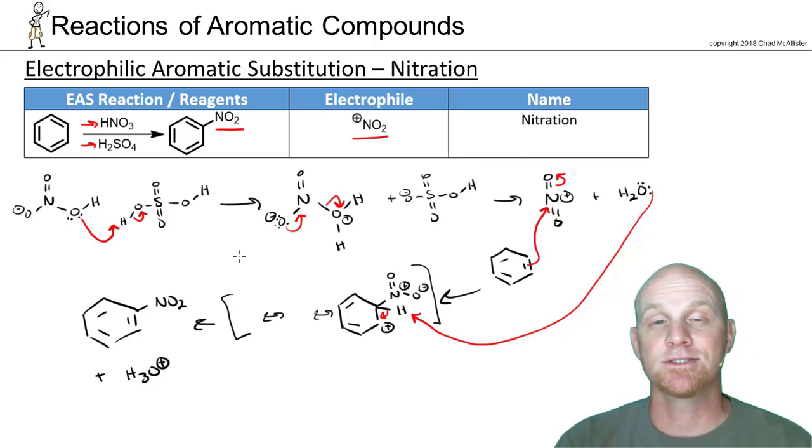So that's your mechanism for nitration. It took us two steps this time to actually form our electrophilic species. But after that, we just had nucleophilic attack and then deprotonation, proton transfer.